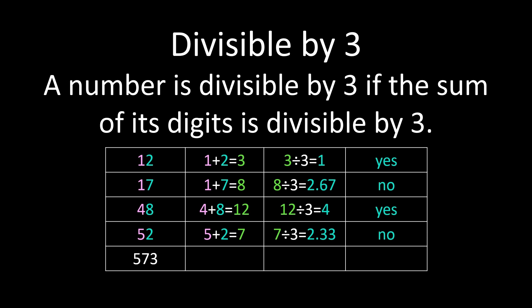And we can apply it to any number, regardless of the size of the number. Looking at 573, we're going to add 5 plus 7 plus 3, which is 15. 15 divided by 3 is 5, so 573 is divisible by 3.